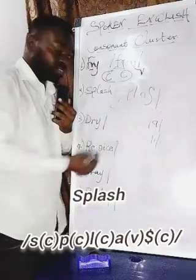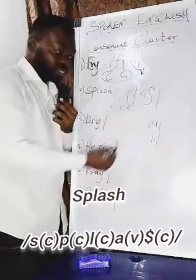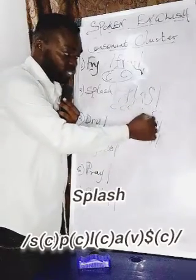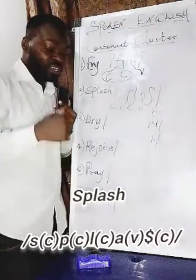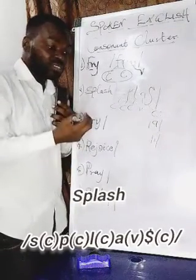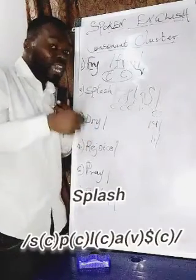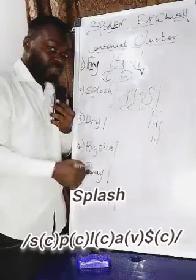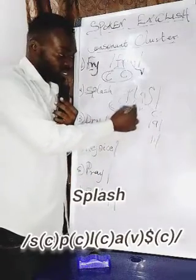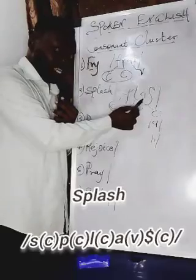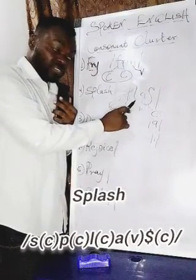Now, what are the consonant symbols in 'splash'? We have our first consonant, second consonant, third consonant, then our vowel, then the final consonant. Where do we have our cluster? Remember, a consonant cluster is the sequential arrangement of two or more consonant sounds without an interfering vowel. So the cluster is between the first, second, and third consonants. Since a vowel separates the third consonant from the last, there is no cluster there.